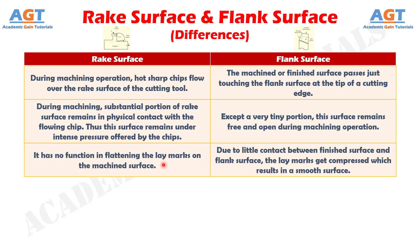Number three: rake surface has no function in flattening the lay marks on the machined surface, whereas due to little contact between the finished surface and flank surface, the lay marks get compressed, which results in a smooth surface.